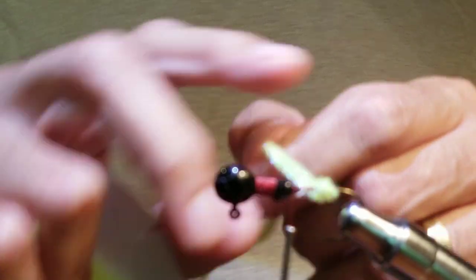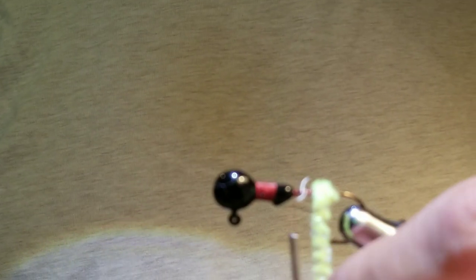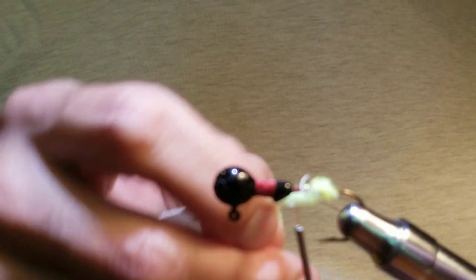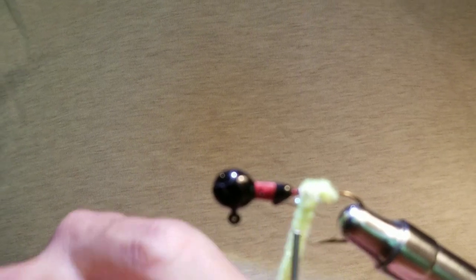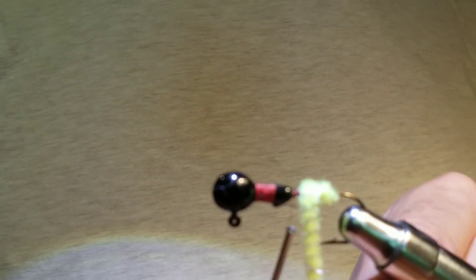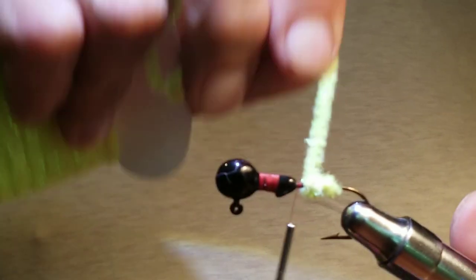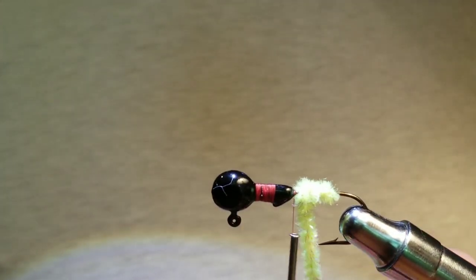And again, so this is just to hold on to some of the scent. This chenille that I'm using is actually crappie chenille, so it's kind of small—it's like a size two or three, I'm not really sure.